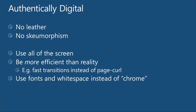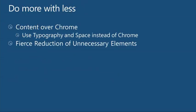The other thing authentically digital means is: use all of the screen. Don't put extra Chrome where you don't need it — go right to the edges. On Windows Phone and Windows 8, everything goes right to the edges; bleed off the edge to show there's more information instead of wasting space with a scroll bar. A quick navigation to the next page gets the user there faster than a slow page curl.